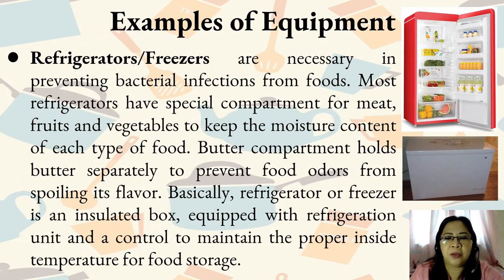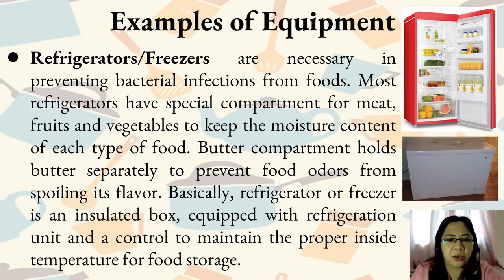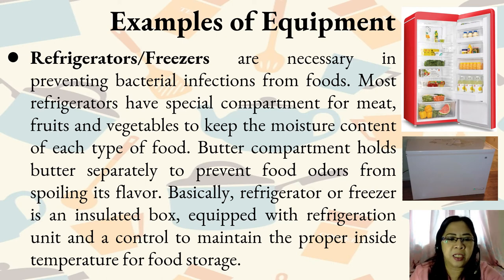Refrigerators or freezers are necessary in preventing bacterial infections from foods. Most refrigerators have special compartments for meat, fruits and vegetables to keep the moisture content of each type of food. The butter compartment holds butter separately to prevent food odors from spoiling its flavor. Basically, a refrigerator or freezer is an insulated box equipped with a refrigeration unit and a control to maintain the proper inside temperature for food storage.